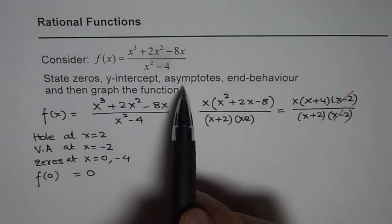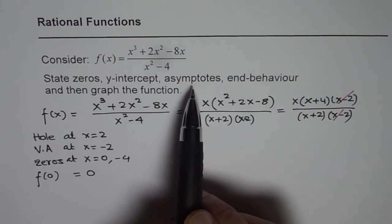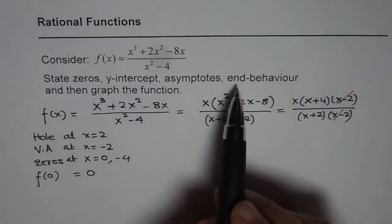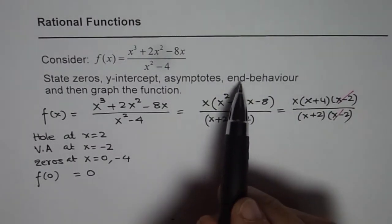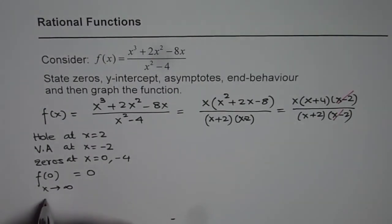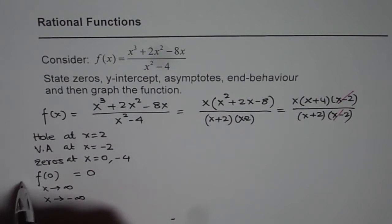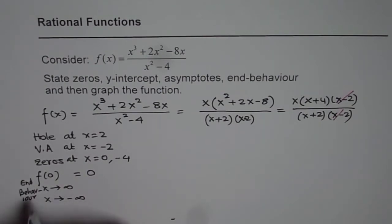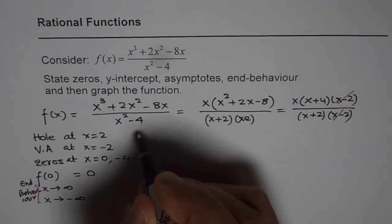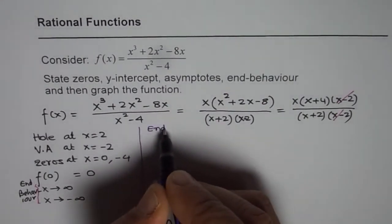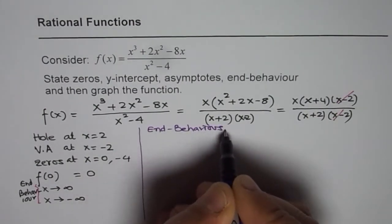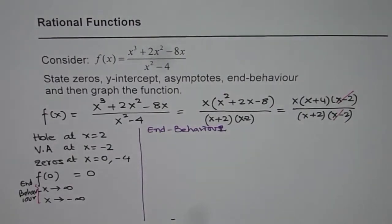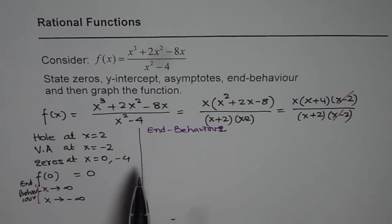Now we need to analyze asymptotes and end behavior. One of the asymptotes — the vertical asymptote — I have already discussed. End behavior is the behavior of the function as x approaches positive infinity or x approaches negative infinity. So that is our end behavior, which we'll address next.